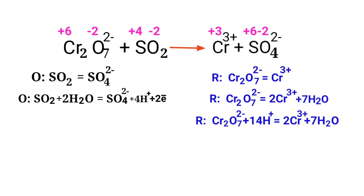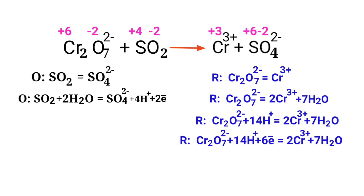Now equalize the charges in the reduction half-reaction. Both sides are not equal. To make them equal, you should add 6 electrons to the left side to make it equal to +6. The charges are now equalized in the reduction half-reaction.